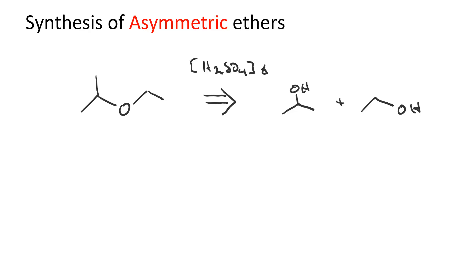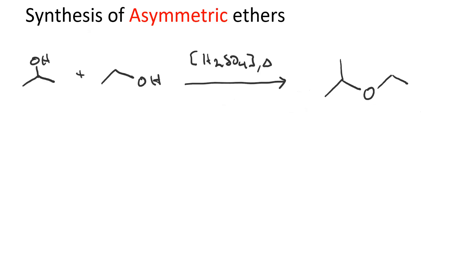Well, you'd get 50% of the desired product, but you'd also get some undesired products. So, just statistically, we could combine this with this two ways, or we could combine two of these, or we could combine two of these.